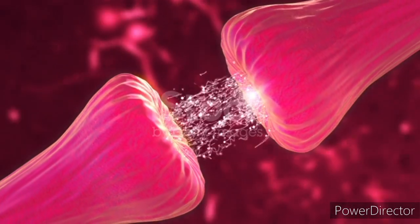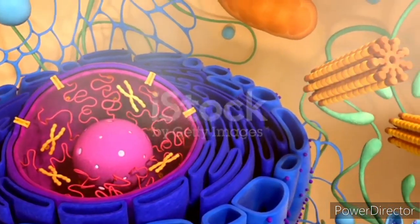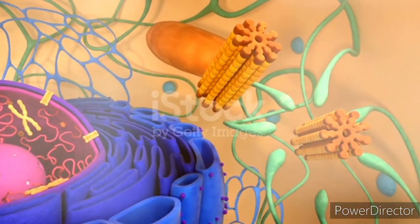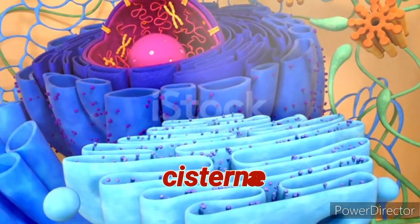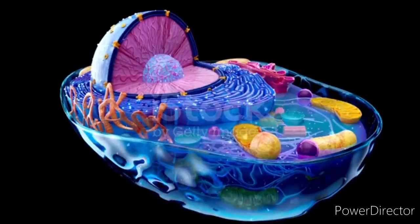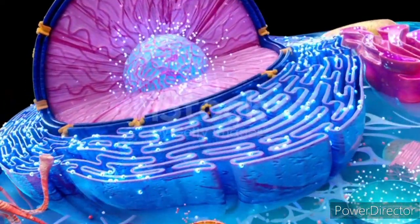The endoplasmic reticulum is an extensive membrane system, forming a network of tubules and flattened sacs called cisternae that extend throughout the cell. It is connected to the nuclear envelope and plays a role in the synthesis and transport of lipids and proteins.